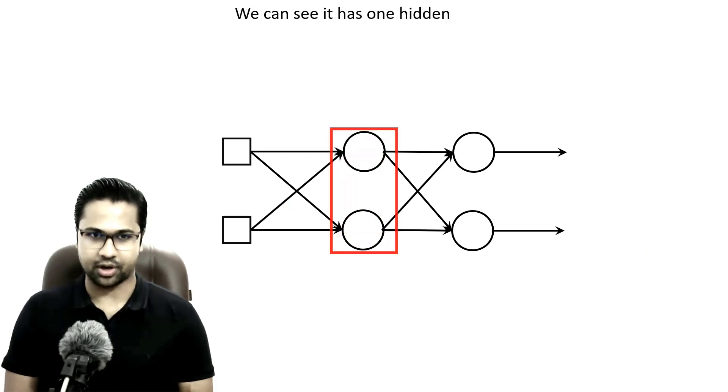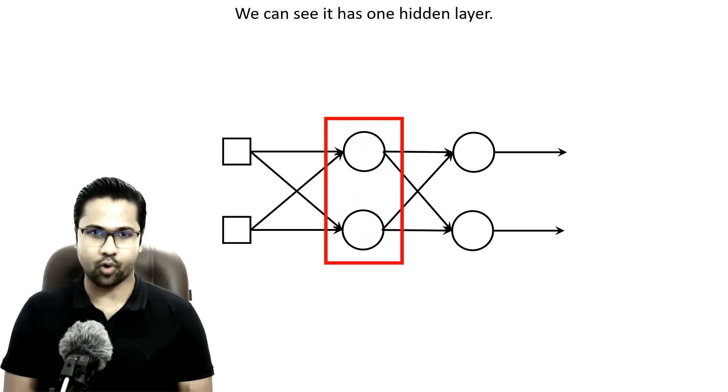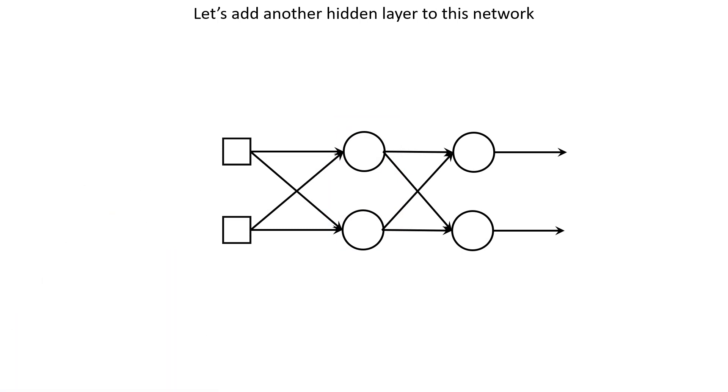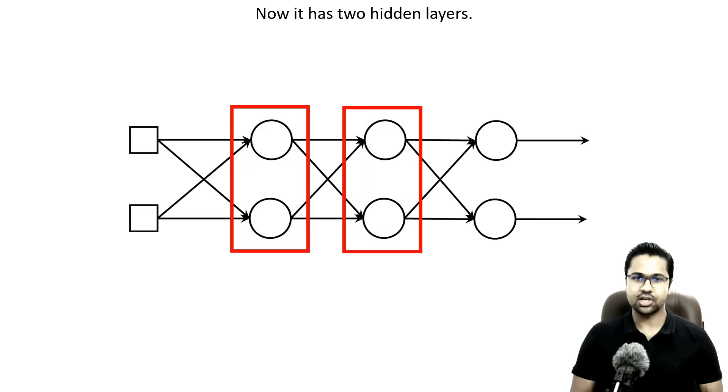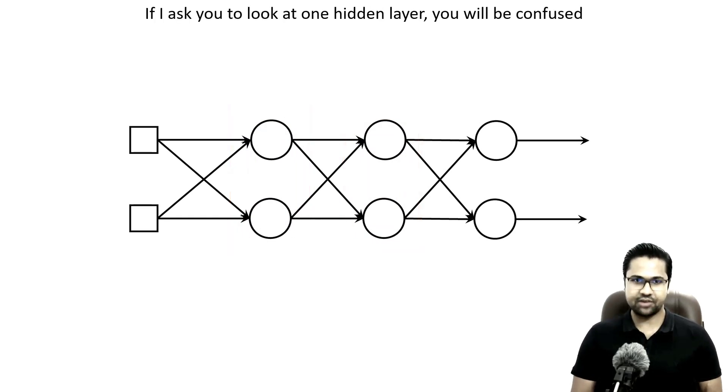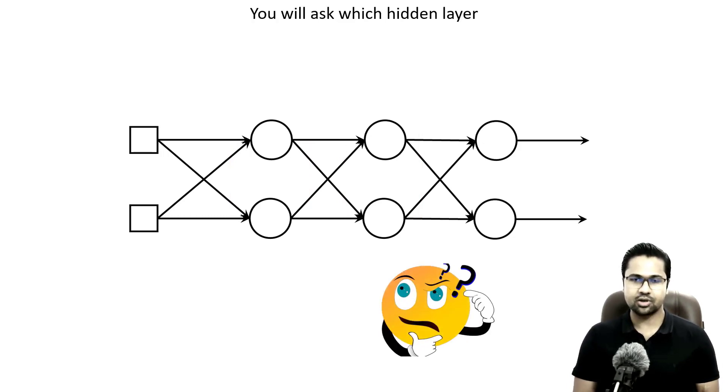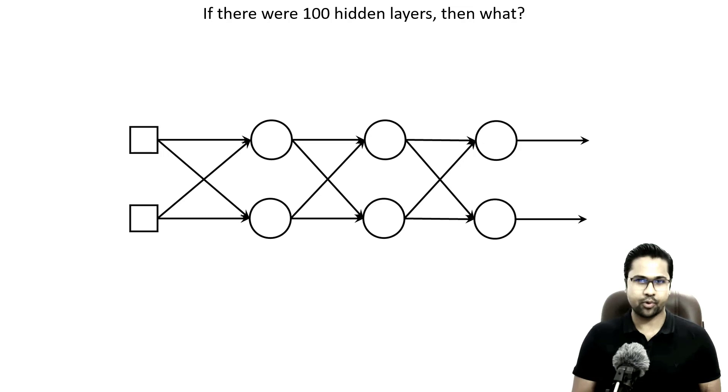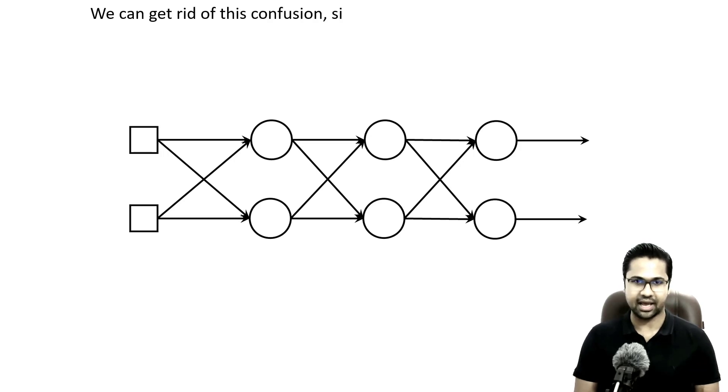This is a multi-layer neural network. We can see it has one hidden layer. Let's add another hidden layer to this network. Now it has two hidden layers. If I ask you to look at one hidden layer, you will be confused. You will ask, which hidden layer? The answer could be either the first one or the second one. If there were 100 hidden layers, then what? It would be very confusing to identify a particular hidden layer.